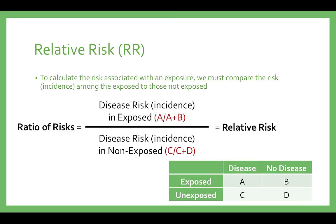Relative risk is calculated by dividing the proportion of individuals who suffered the event in the exposed group — here it is A divided by A plus B — by the proportion of individuals who suffered the event in the unexposed group — here it is C divided by C plus D. Using our secondhand smoke example, let's input some numbers into our 2x2 table and calculate relative risk.